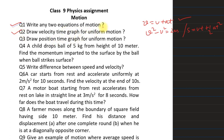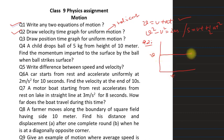Second question: draw a velocity-time graph for uniform motion. Since motion is uniform, velocity is constant throughout the journey. The VT graph for uniform motion is basically a straight line parallel to the time axis.